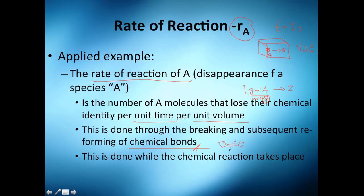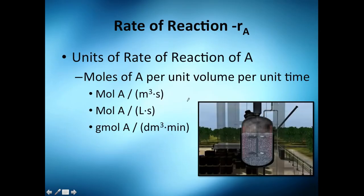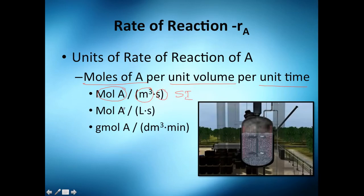The units of rate of reaction of A are moles of A per unit volume per unit time. This can be moles of A per cubic meter per second in SI units, but normally at lab scale you use liters per second or cubic decimeters per minute. If you have a very fast reaction you use seconds; for slower reactions, minutes or even hours.